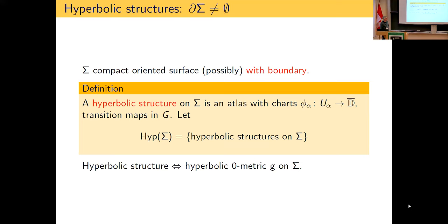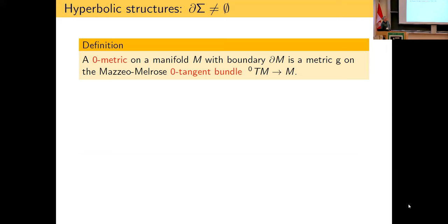With a boundary, the hyperbolic structure is equivalent to giving a hyperbolic zero metric on the surface. A zero metric on a manifold with boundary is a metric in the usual sense on the zero tangent bundle. The zero tangent bundle is the vector bundle whose sections are the vector fields which vanish along the boundary.